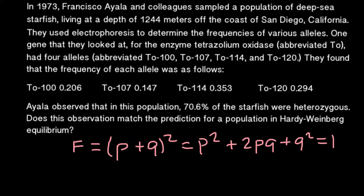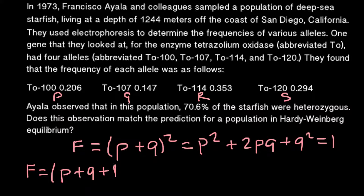In today's problem we have four alleles, so we are going to use a modified formula. If we call the standard version the binomial expansion, then today with four alleles — let's call them p, q, r, and s — our formula would look as follows: frequency = (p + q + r + s)².